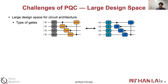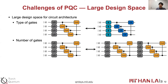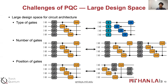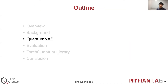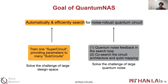Another challenge is the large design space of PQCs. For example, we can select different types of gates such as U3 and CU3, or X and CZ gates. We can also choose different numbers of gates. Even with the same number of gates, the positions of the gates can be very diverse, so the design space is huge. To solve these two challenges, we propose the QuantumNAS framework, whose goal is to automatically and efficiently search for noise-robust quantum circuits.